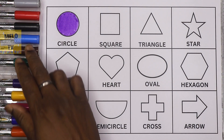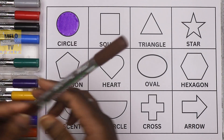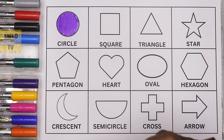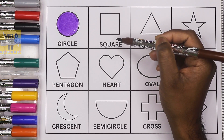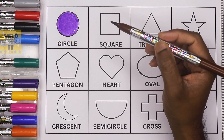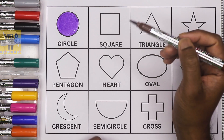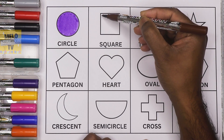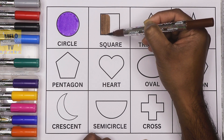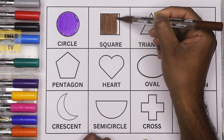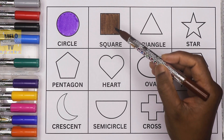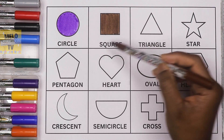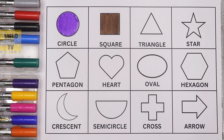Next I'll take brown color — this is brown color — to color this shape. This is a square. Square has four sides and all four sides are equal. Let's color it. So now it is a brown square. Very good.